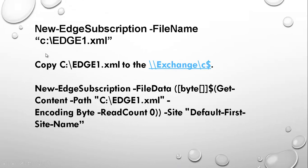First of all, we will create a new edge subscription file on our edge server by the name of edge1.xml, and then we will copy that edge1.xml file to our mailbox server. The name of our mailbox server is Exchange and I will put that inside the C drive. After that, we will create a new edge subscription by running a command. Let's go to our server and see how we can perform this.